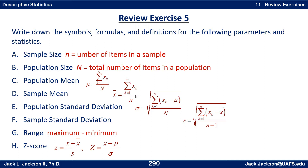The sample mean uses the same approach but with different symbols. Instead of μ for population, we use x̄ (x-bar) for the sample mean. When summing, we sum only up to lowercase n (the sample size), and we divide by lowercase n. In both cases the operation is the same: add them up, divide by how many you have.